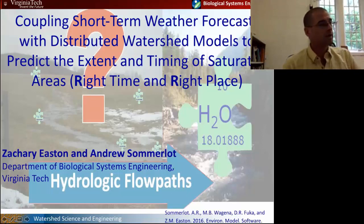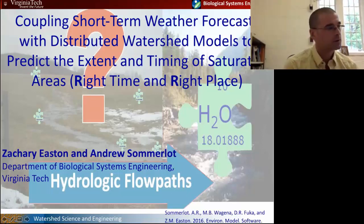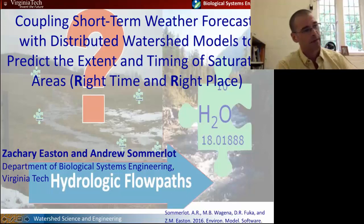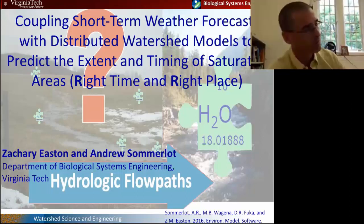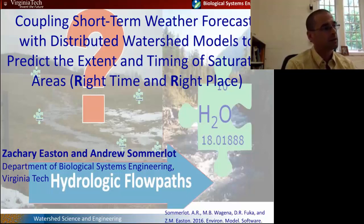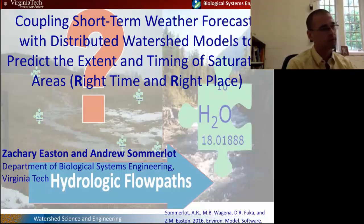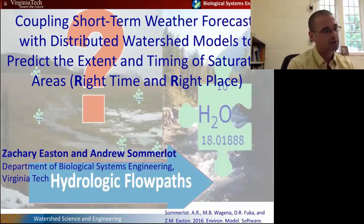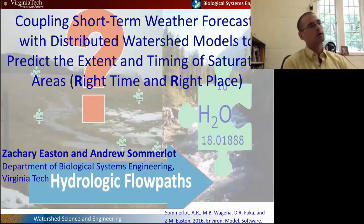I'm glad to be here. My name is Zach Easton. I'm a hydrologist and watershed modeler in the Department of Biological System Engineering at Virginia Tech, and I'll talk a little bit about the tool that we developed today. It's similar in application to the one Tony just presented, but it uses a slightly different methodology to get at the same watershed-to-field-level scale predictions of saturated contributing areas across a watershed.